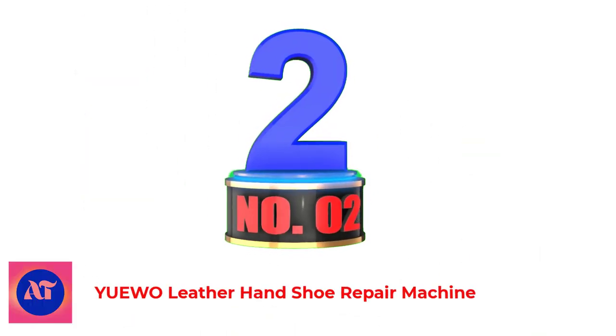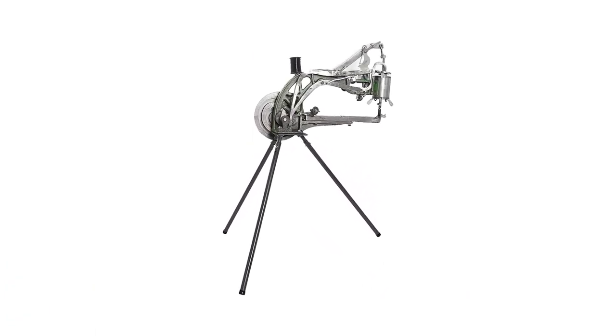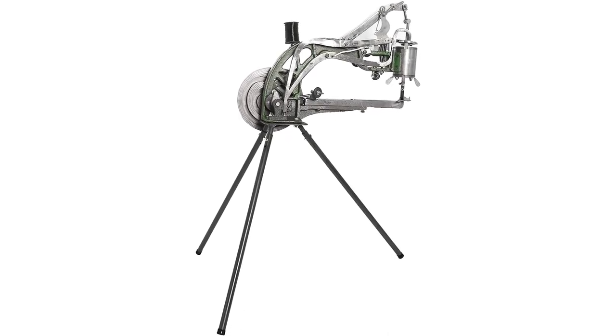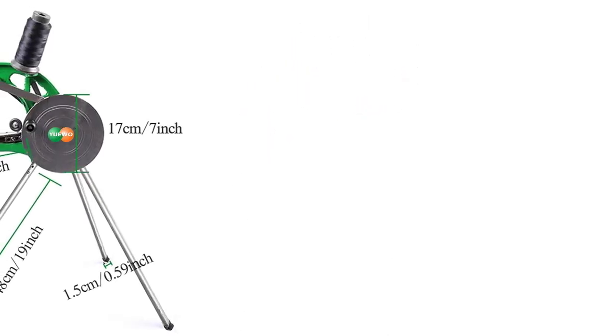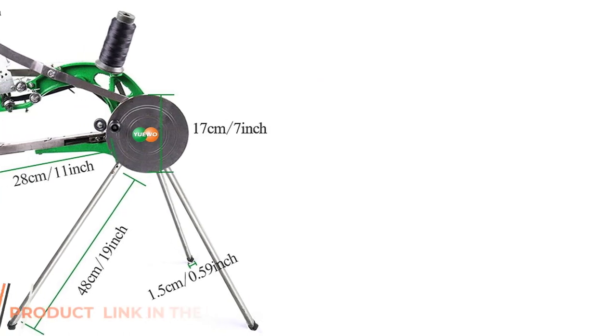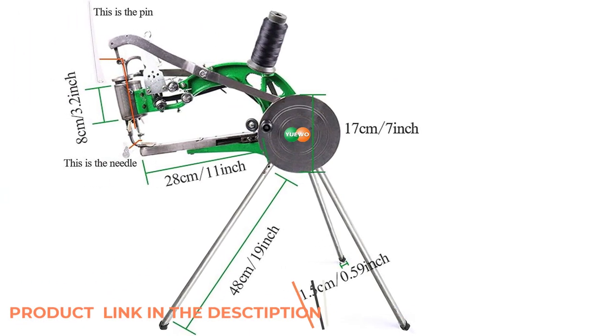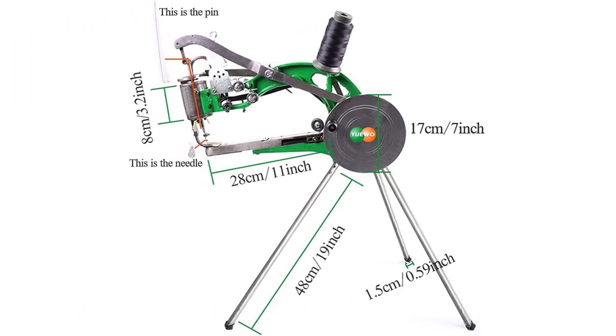Number 2: UEWO Leather Hand Shoe Repair Machine. UEWO is a sturdy cobbler sewing machine that is both easy to install and use. It has a sturdy design that is ideal for commercial use and needs very little maintenance. Overall, the machine has a compact and basic structure. It takes up very little space and makes very little noise.